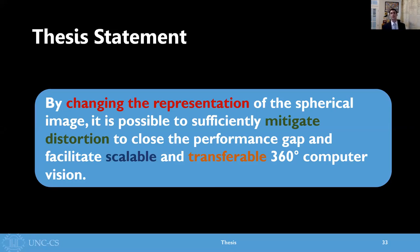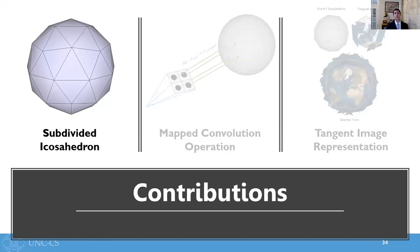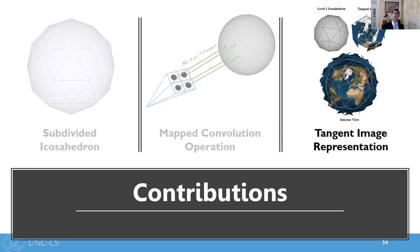So this brings me to my thesis statement today: by changing the representation of the spherical image, it is possible to sufficiently mitigate distortion to close the performance gap and facilitate scalable and transferable 360 computer vision. In support of this thesis, I've proposed three contributions. First, to use a subdivided icosahedron for a lower distortion representation of a spherical image. Next, the mapped convolution operation, which enables a fair analysis of different spherical image representations. And finally, the tangent image representation, which is derived from the icosahedron and provides a low distortion representation that enables both scalability and transferability for spherical images.